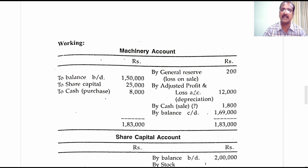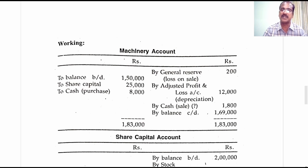We were also informed that depreciation of 12,000 rupees was provided this year. The journal entry: adjusted profit and loss account debit 12,000 to machinery 12,000. Now finding the balancing figure between the debit and credit side of the machinery account, we get 1,800 rupees on the credit side, which is nothing but the sale proceeds of machinery. Entry: cash account debit to machinery account. The sale proceeds of 1,800 rupees will be taken over to the sources side of the funds flow statement.